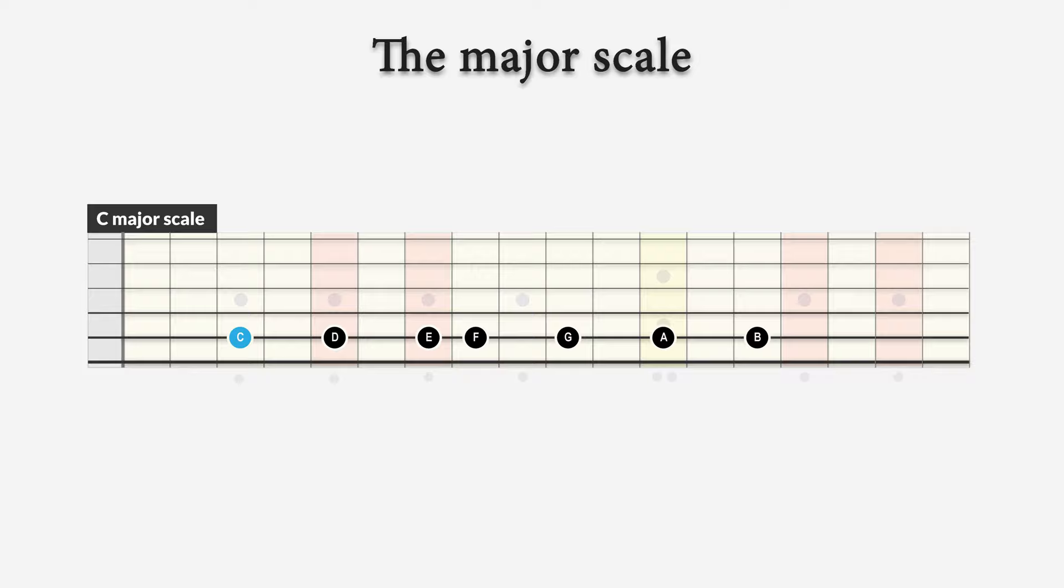So, let's play the wide interval scale patterns of the C major scale starting on the notes D, E, F, G, A, and B, and play them over the tonic chord, C major seven, to see how they sound.